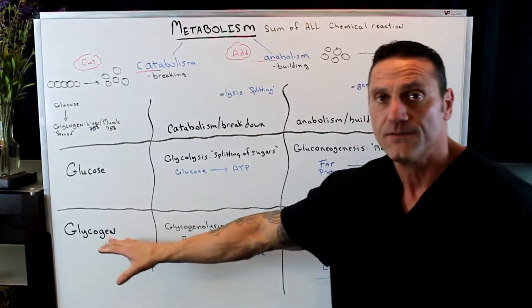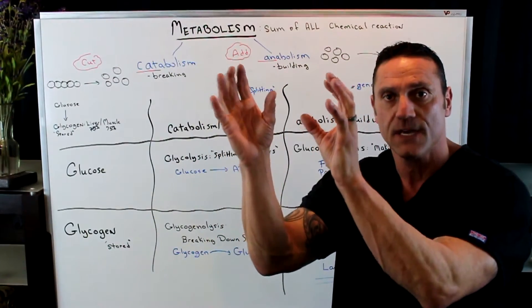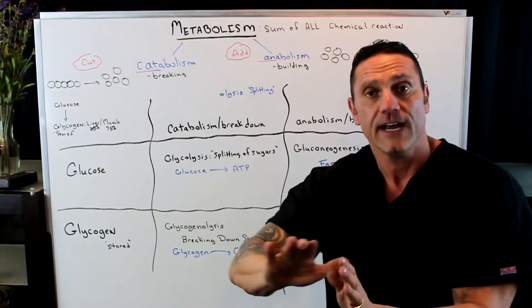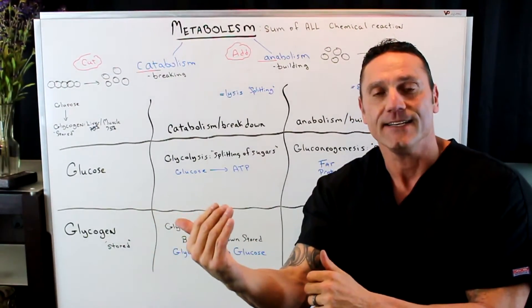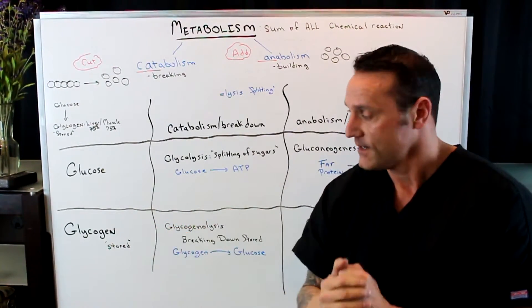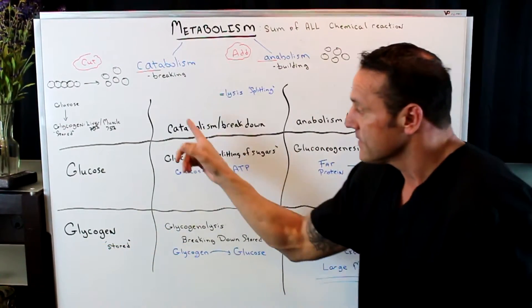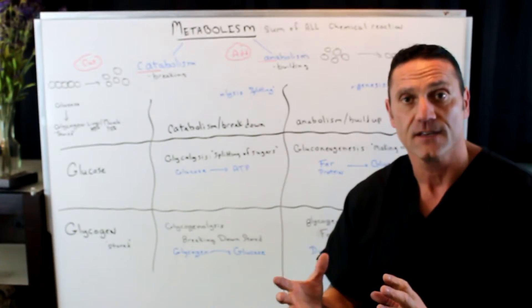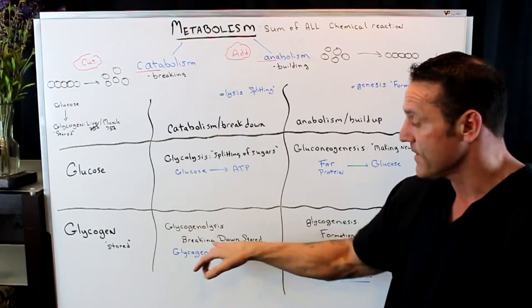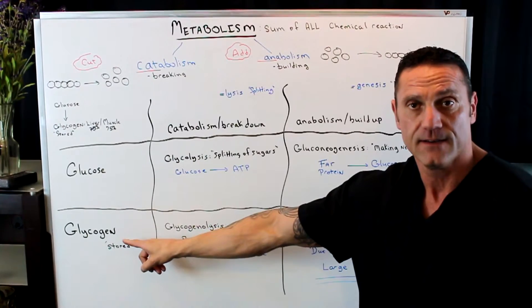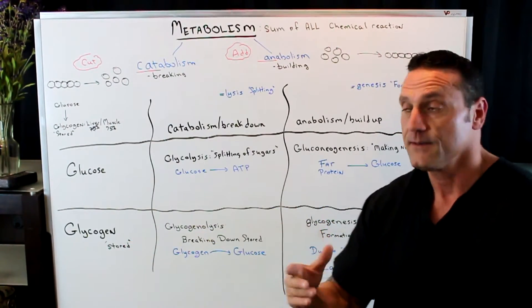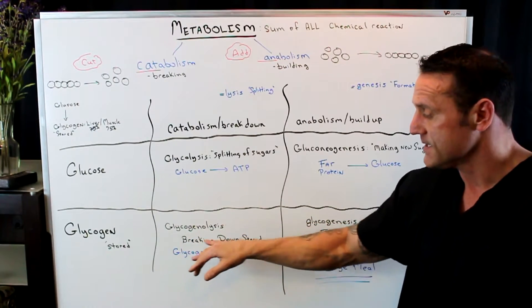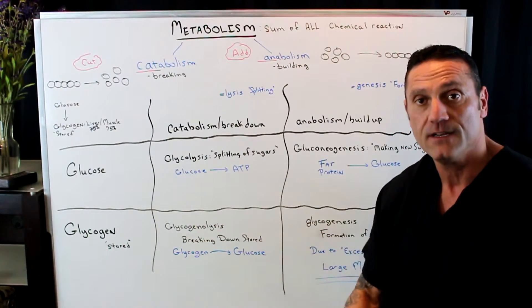Now let's talk about the stored form. Glucose to glycogen — glycogen is what? The stored grapes. We need it for energy later. Catabolism — the breakdown — in a process called glycogenolysis, the splitting, the breaking down of stored glycogen to glucose. It's catabolizing. Glycogenolysis: the breaking down of stored glycogen to glucose.